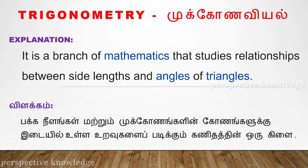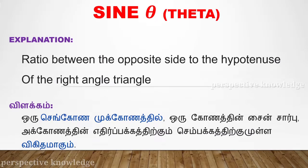Trigonometry deals with the size and angles of the triangle. Sin Theta specifically describes the relationship between the opposite side and the hypotenuse of the triangle.